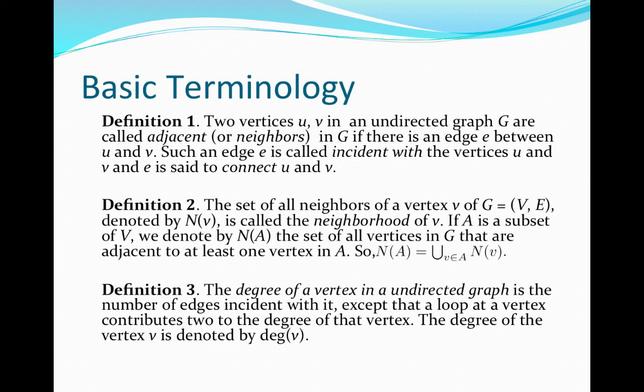Okay, so we'll look at the basic terminology that we need for this video, and you will be required to do some reading and some examples on your own. So we say that two vertices in an undirected graph G are adjacent if there is an edge between them, and the edge between them is said to be incident with these two vertices, or said to connect these two vertices.